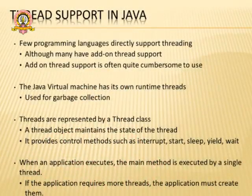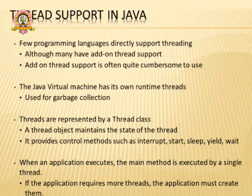Now we will go into detail about how threads are executed in Java. In Java, we have direct support for multithreading. In many other languages, there is always add-on support required. But here, the Java Virtual Machine has direct support for multithreading. There are Thread classes and the Runnable interface, which are used for implementing all these threading concepts.